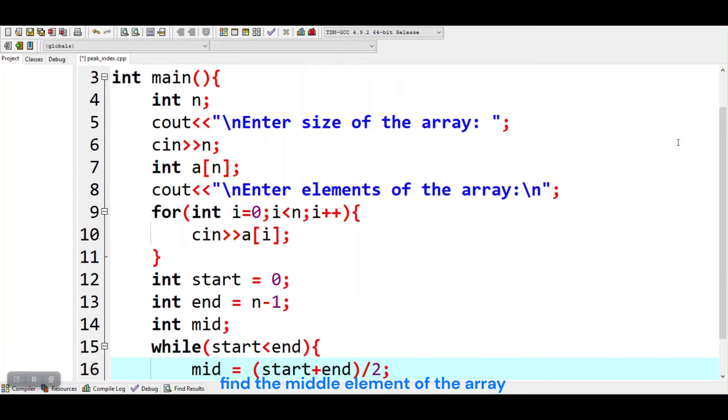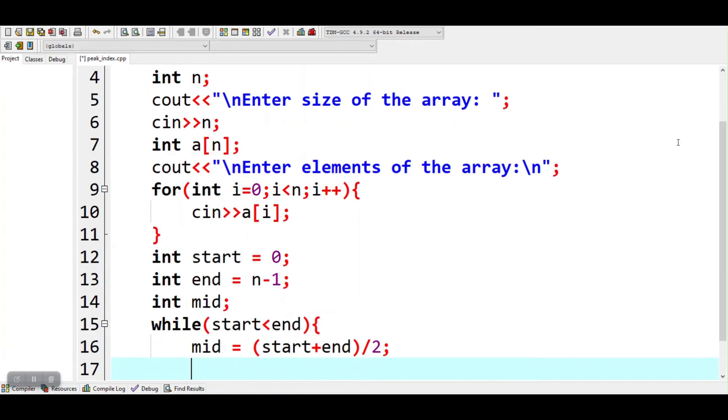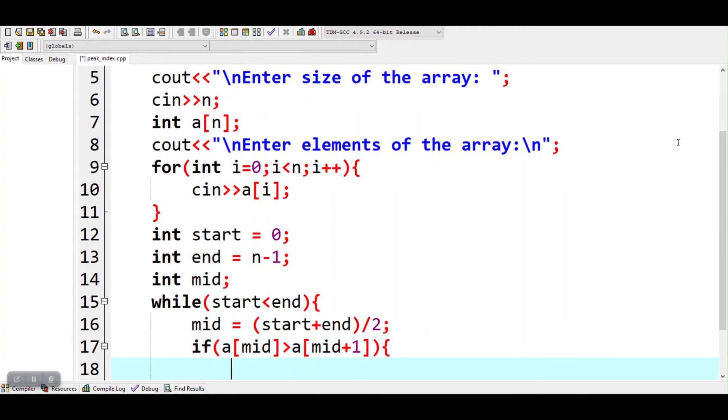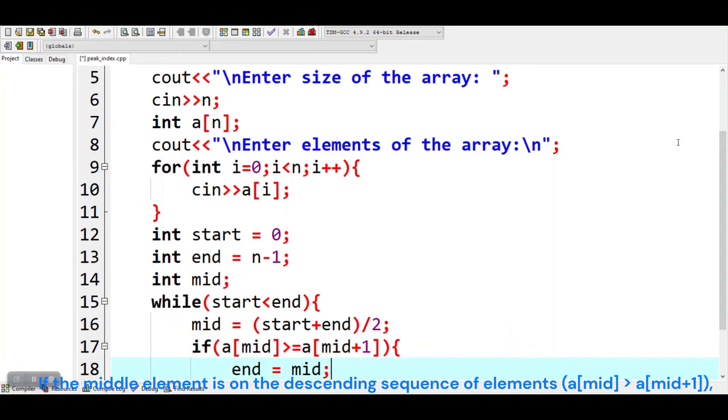Find the middle element of the array. If the middle element is on the descending sequence of elements, a[mid] greater than a[mid+1], then it means that the peak element will be on the left side of this middle element. Hence we will reduce the search space between the start and middle element.